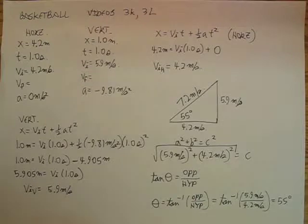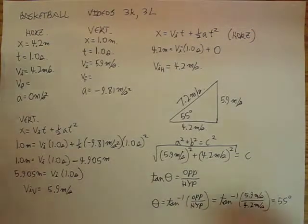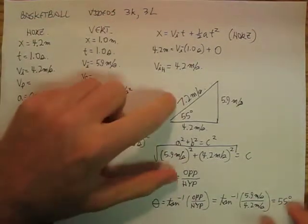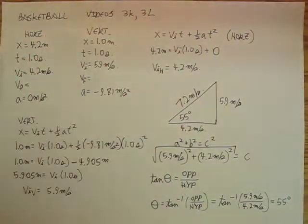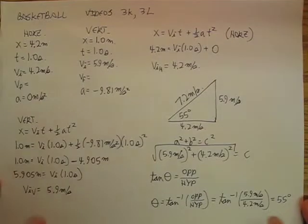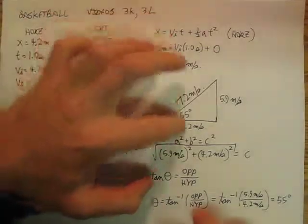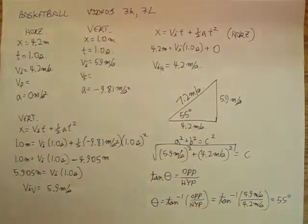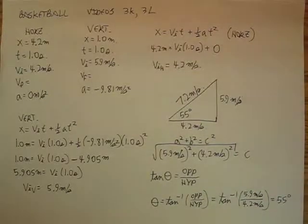And we're going to come back, and in the next video, we're going to switch it up. Instead of working back from the initial speed to the initial speed and the angle, we're going to look at a student throwing a snowball off of a cliff, and we're going to work from the initial velocity to the horizontal distance.